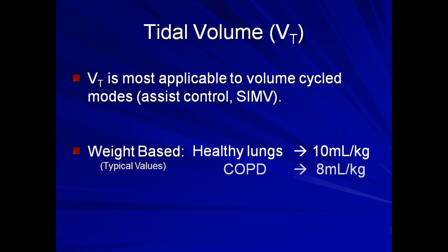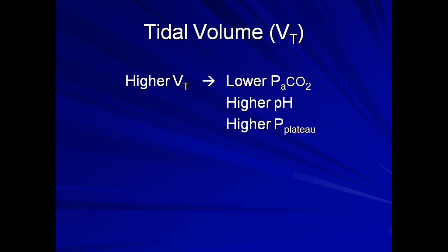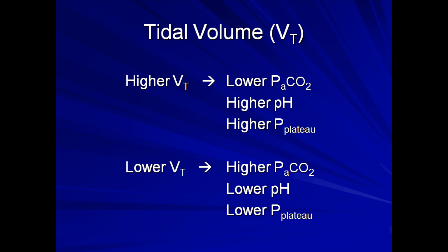Patients with COPD are typically ventilated with tidal volumes closer to 8 mL per kg. Lower volumes in these patients have numerous benefits, such as lower risk of auto-PEEP, lower risk of barotrauma, and lower risk of inadvertently overcorrecting a chronic respiratory acidosis. In ARDS, typical volumes are 6 mL per kg of ideal body weight, or sometimes even less. Ventilation in ARDS will be the primary topic of the next lecture. As a general rule, higher tidal volumes lead to lower PaCO2s, higher pH, and higher plateau pressure, while lower tidal volumes lead to the opposite.